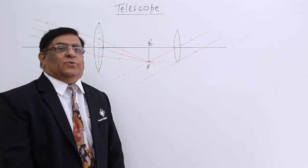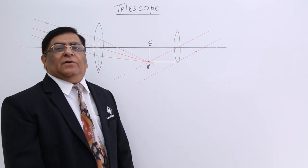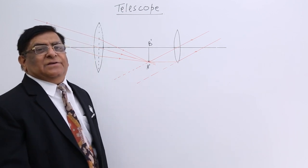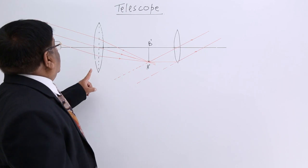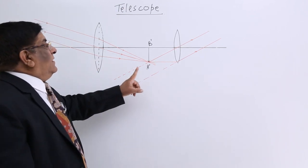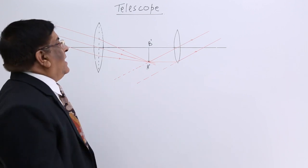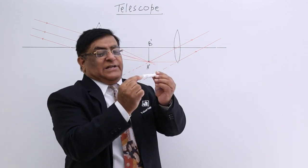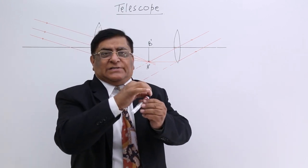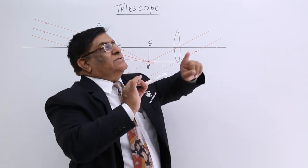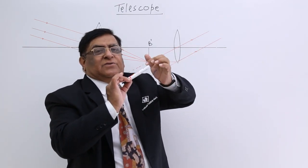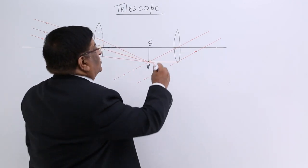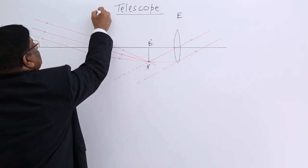There are very complicated telescopes made nowadays, but what we will study is simply the principle of a telescope — a very simple one. It is made with the combination of two lenses, both convex lenses fitted in a tube. One convex lens is placed towards the object, called the objective lens, and one is towards the eyes, called the eyepiece.